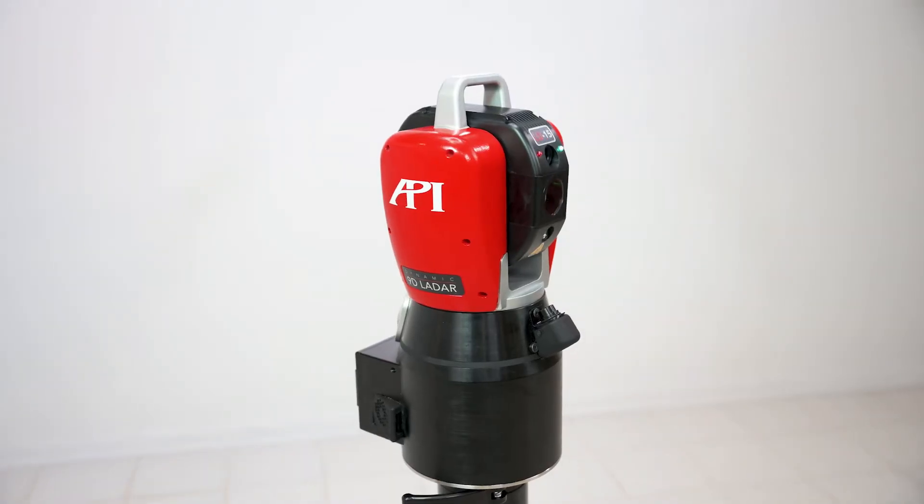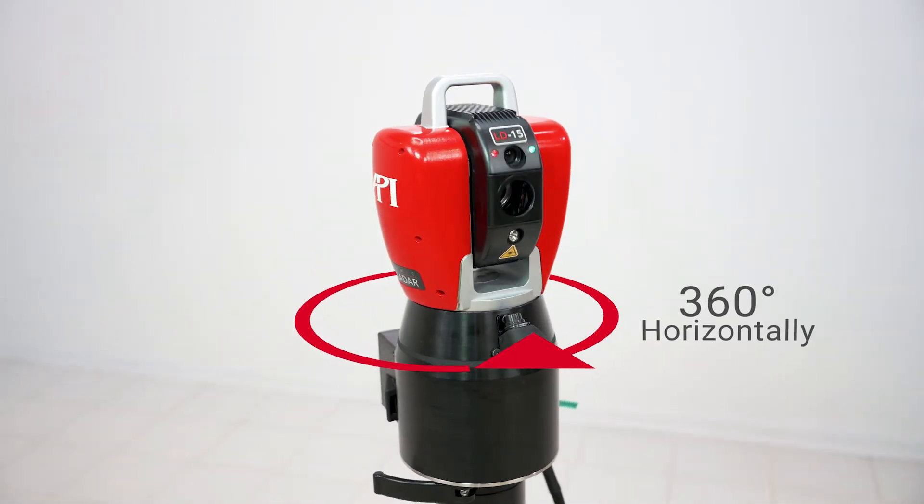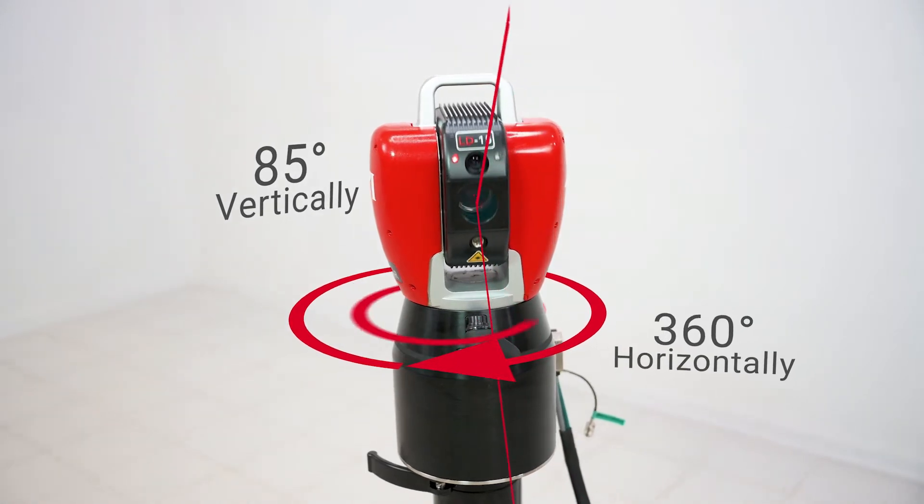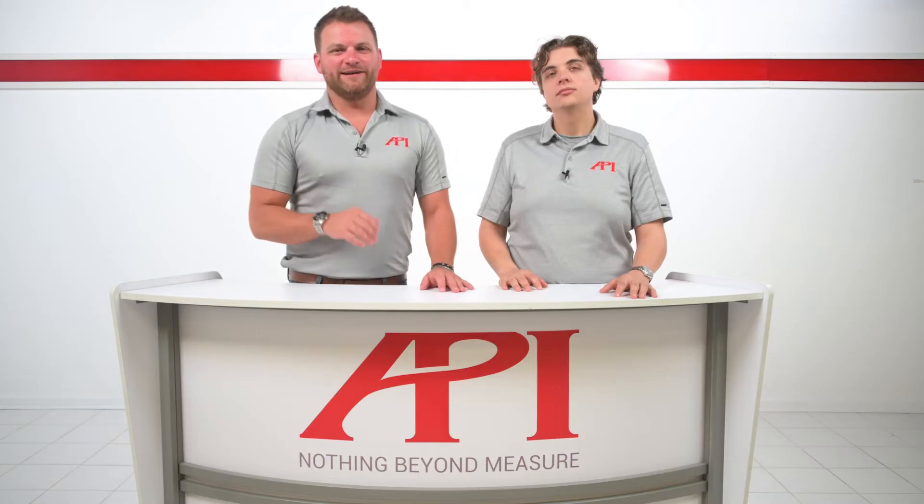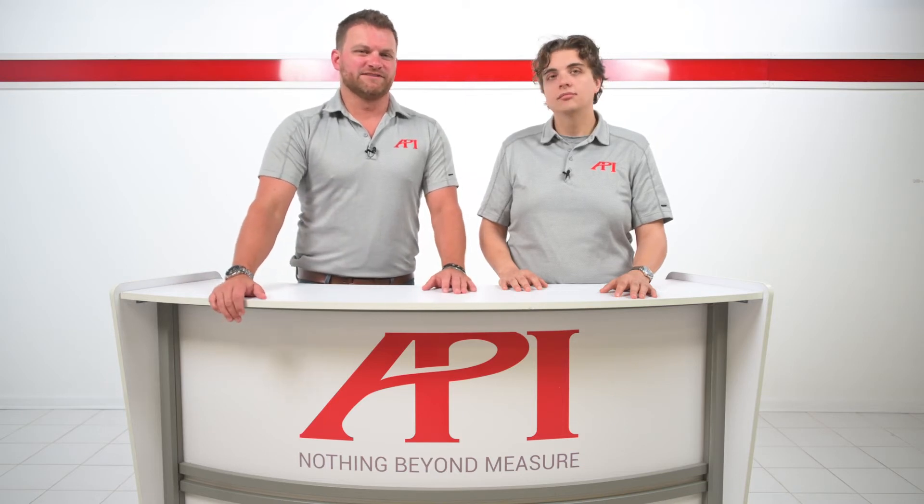9D LADAR is able to measure points in all 360 degrees of space around it horizontally and 85 degrees vertically. This coordinate plane extends up to 25 meters from the unit in all directions, with 9D LADAR able to hit points in this plane within a handful of microns depending on the distance.